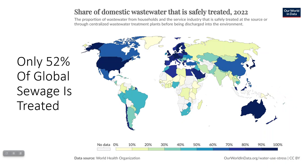How much of global sewage is actually treated? It's mostly in developed countries that you will see a lot of wastewater being treated. This graph shows what percentage of domestic wastewater is safely treated in each country, and you'll note that only about 52% of global sewage is treated. This could be because of lack of regulations or just lack of facilities.